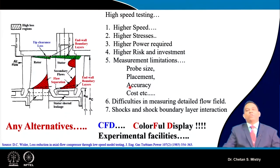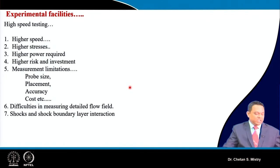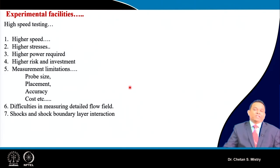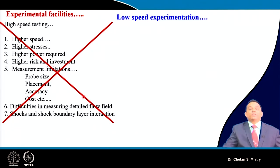Companies may have their own experimental facilities, but they are more involved in research, development, fabrication, and testing. The detailed flow field testing work often goes to universities or research centers. For universities, all the challenges discussed are very significant, so we need a solution — and that solution is low speed experimentation.